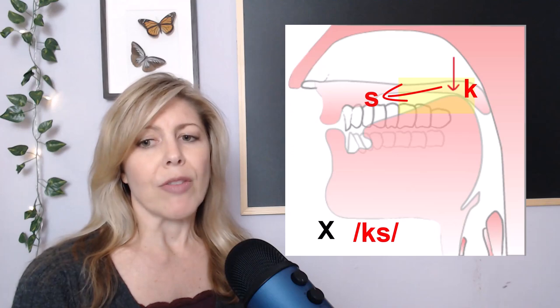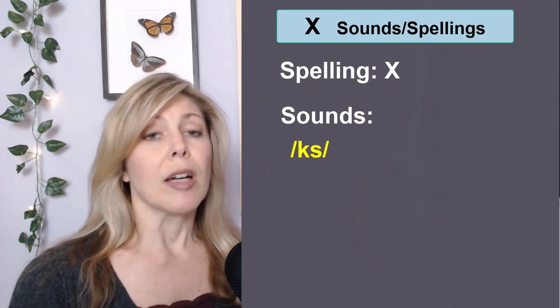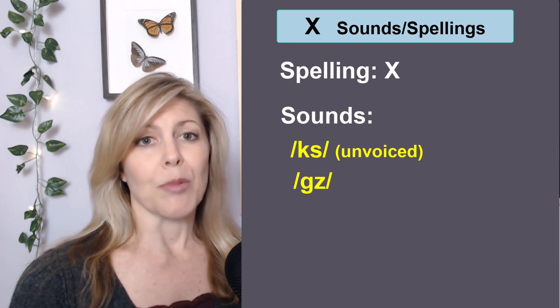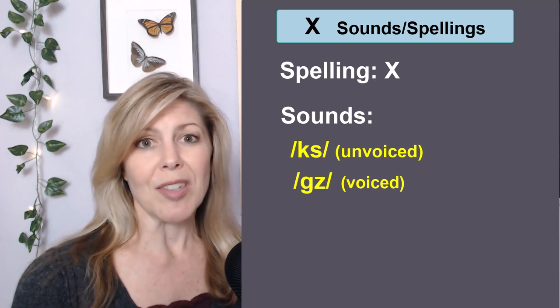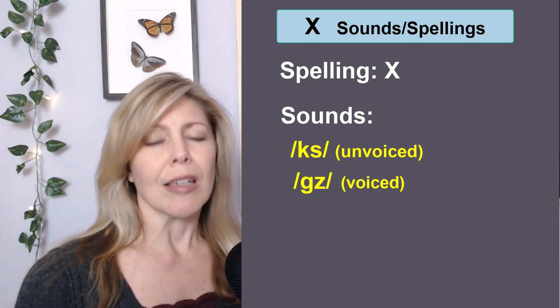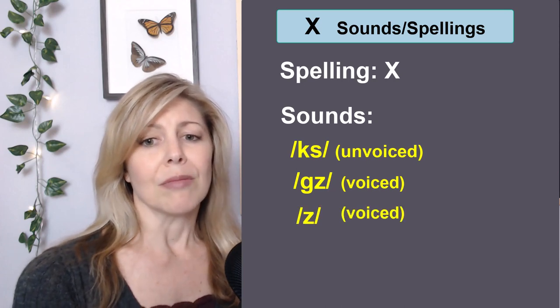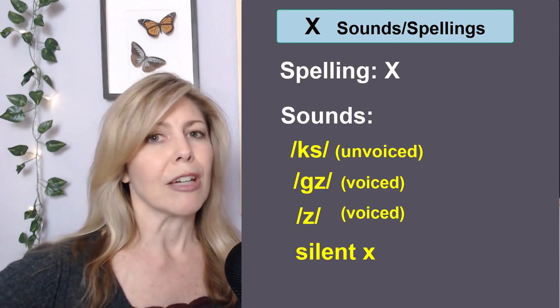However, this letter can have several different sounds. So let's take a look at those. Of course, we have the KS sound. We also have the GZ — sometimes we hear the voiced G sound with the Z. K and S are voiced: GZ. It's the same way we produce KS, except that it's voiced: GZ. And then we have Z, or we can have a silent X, where we don't hear the letter at all. First, we're going to look at some examples of words with the KS sound.